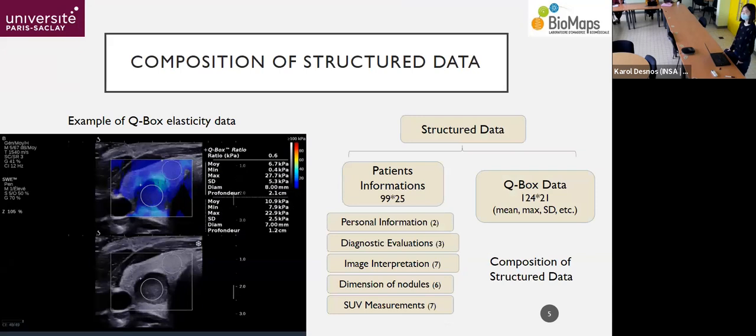And here we have a look on our structured data, the supplementary data we used in our algorithm. So the structured data also has two parts, the patient information and the Q-box data. The patient information, they are read from an Excel table from the doctor, including the personal information, the age and the gender. And the diagnostic evaluation, like the TIRADS score and some other scores. These scores are given by the doctor according to the standard. And also some image description, like how is the contour and is there calcification and also the dimension of the nodules.